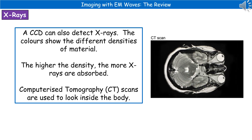We can also use a charge-coupled device, or CCD, for detecting X-rays. This allows us to use colours to show the different densities of the material being imaged — the higher the density, the more X-rays are absorbed.